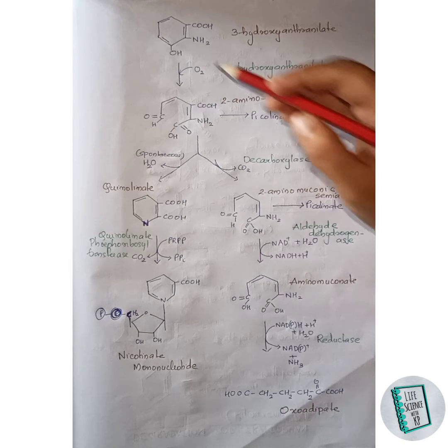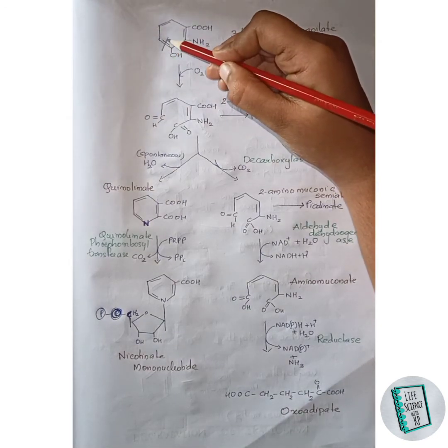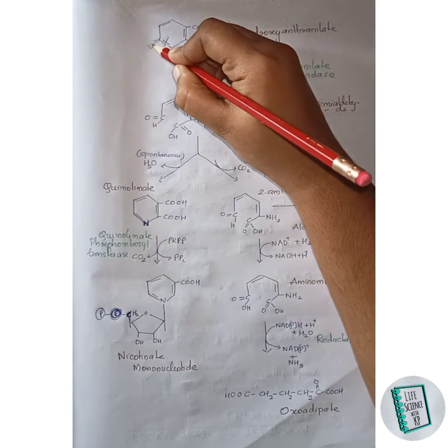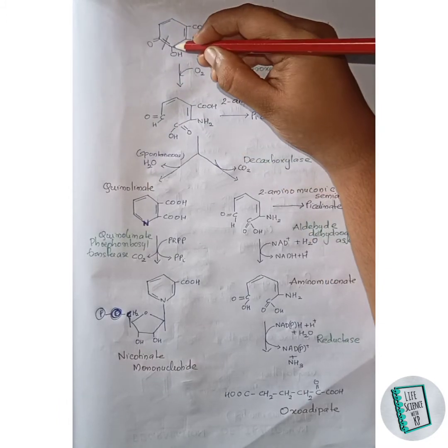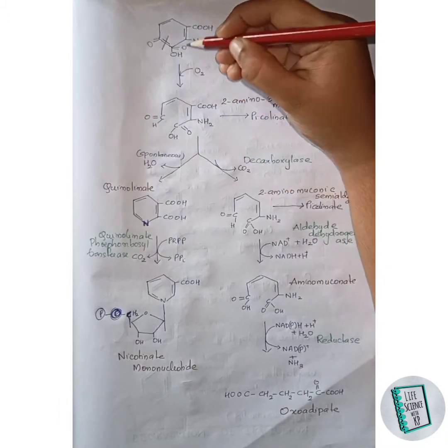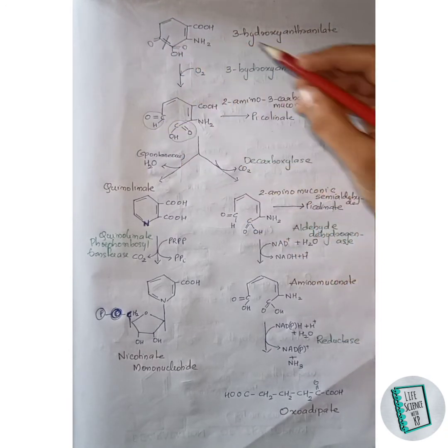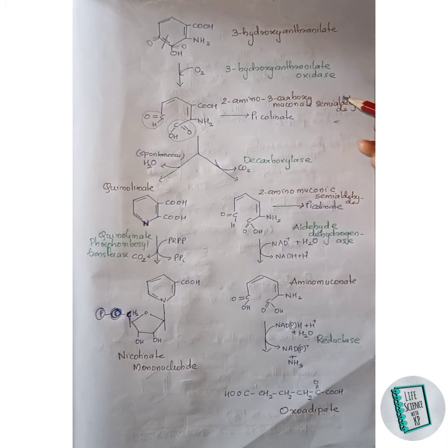3-hydroxyanthranilate then in the presence of 3-hydroxyanthranilate oxidase gets converted to 2-amino-3-carboxy muconate semialdehyde. An oxygen molecule comes and breaks this double bond. One oxygen atom attaches to one carbon forming a double bond, and the next oxygen atom attaches to the other carbon forming another double bond. Thus the COOH group and the CHO group are formed, giving 2-amino-3-carboxy muconate semialdehyde.